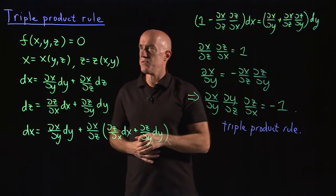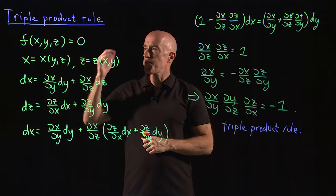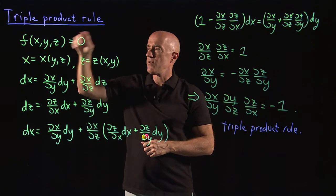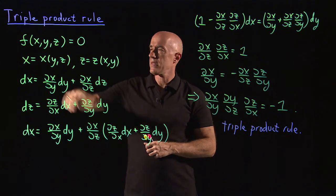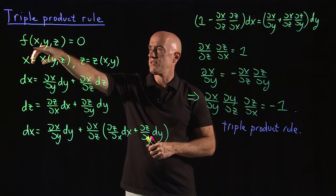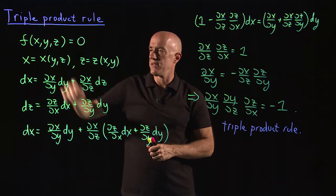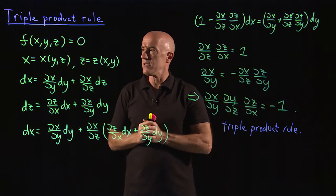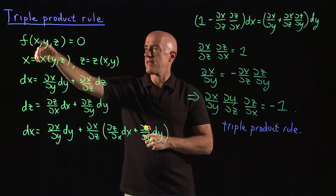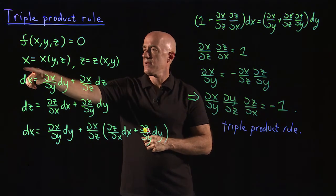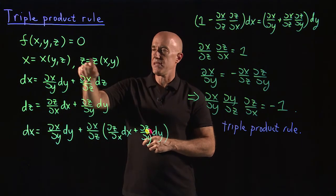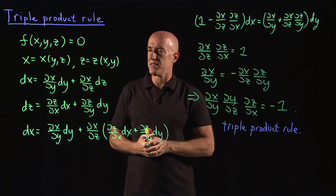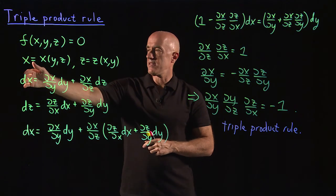Okay, let me review. So the triple product rule is when you have three variables that have a single relationship. And you can write that relationship, say, as f of x, y, z equals zero. We didn't actually use that formula. But what it means is that you can solve for x. So x is a function of y and z. Or you can solve for z, so z is a function of x and y.